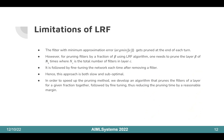Regarding the limitations of LRF: the filter with minimum approximation error is pruned. However, for pruning a beta fraction of filters in a layer, one needs to prune beta of the total number of filters in that layer, and the network is fine-tuned after each removal of a filter. Hence, the LRF method is both slow and suboptimal. For speeding up the pruning method, we have come up with an algorithm that prunes the filters of a layer for a given fraction all at once.